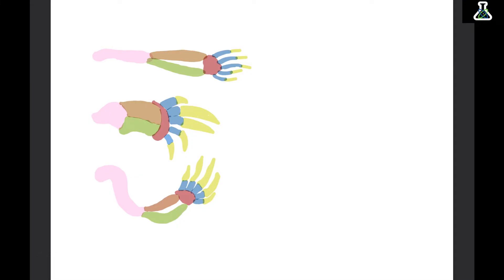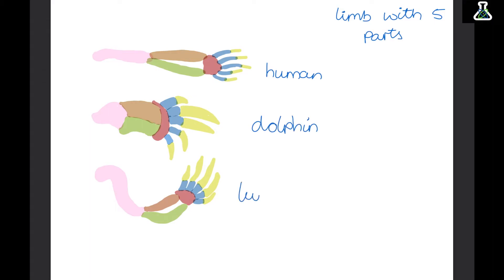The pentadactyl limb can also provide evidence for evolution. This is just a limb with five parts. Lots of different animals have this pentadactyl limb but use it for different purposes — for example, human, dolphin, and turtle limbs. The fact that they all have these five parts suggests they came from a common ancestor, but the shape these parts form is different for each animal, suggesting they have evolved to be better at what they need to do. A human's limb is long to reach and grab, while a dolphin's is short and strong for swimming.